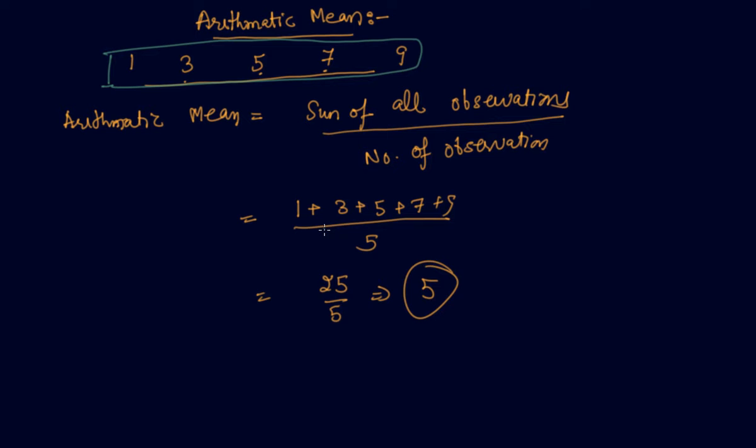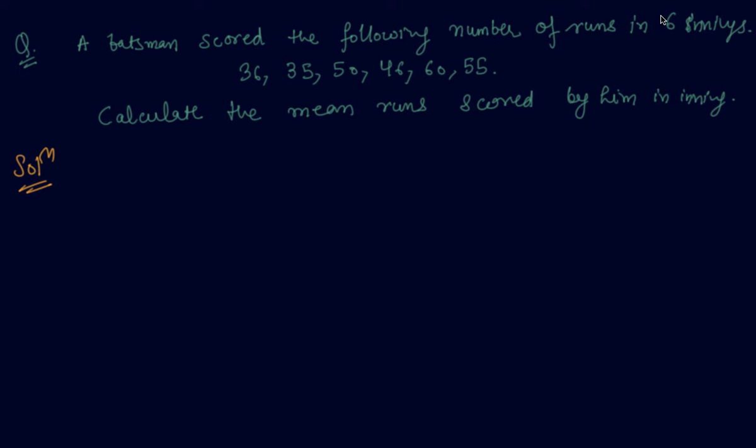It states that in the numerator part you will write the sum of all the observations, and in the denominator you will write the total number of observations. Let me give you an example based on this.